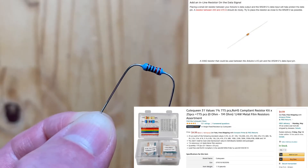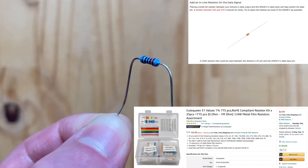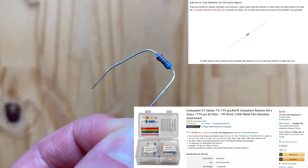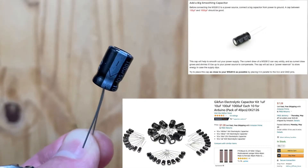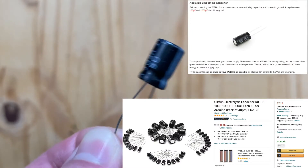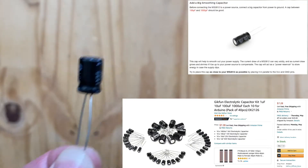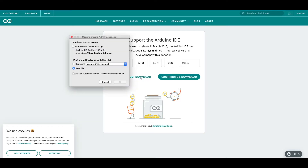We also need resistor sets — we're using a resistor between 220 and 470 ohms. And a capacitor: something between 100 microfarads and 1000 microfarads should work. We also need the Arduino IDE software, which is free.